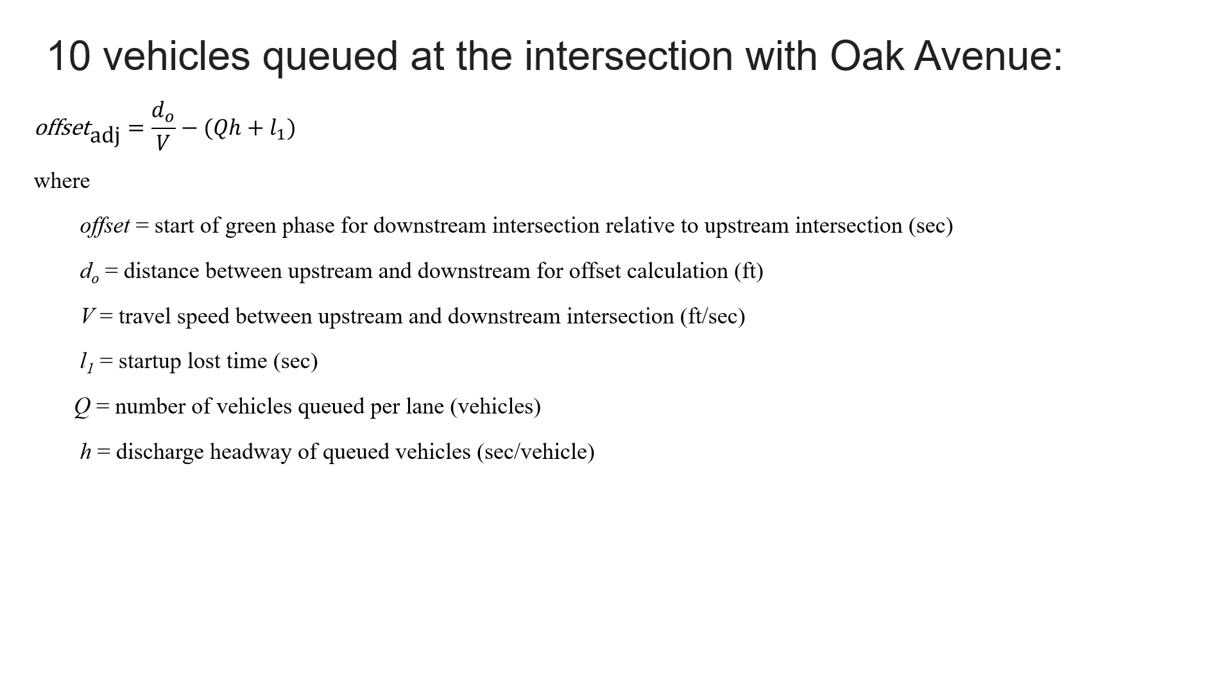We've got our equation here. We're going to start with our distance divided by the speed, so that's the d₀ over V, and then we're going to subtract off the parameters based on the queue that's already at Oak Avenue. So we have for our first component, 800 feet divided by 45 miles per hour multiplied by 1.467. Again, that 1.467 is just the conversion factor. We're dealing with feet and miles per hour, so that's helping us with that conversion.